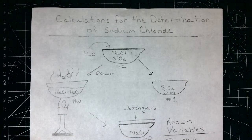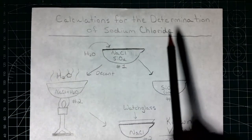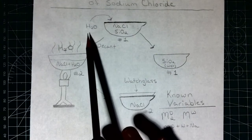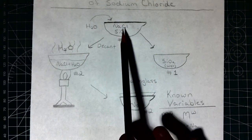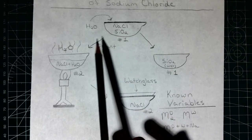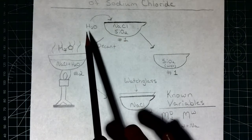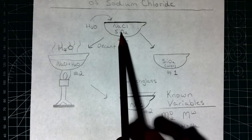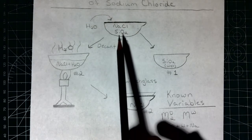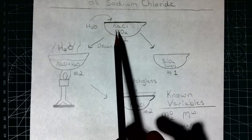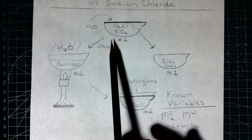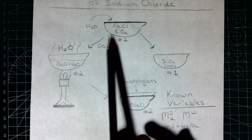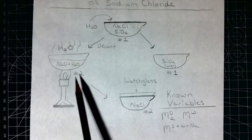Now we'll look at the next section titled Calculations for the Determination of Sodium Chloride. Here we're going to use the solubility difference between sodium chloride and silicon oxide to separate the two. Salt readily dissolves in water but sand doesn't, so we'll add water and stir until all the salt dissolves and sand remains. Then we'll carefully pour off the water — but not the sand — into a different dish called dish two.